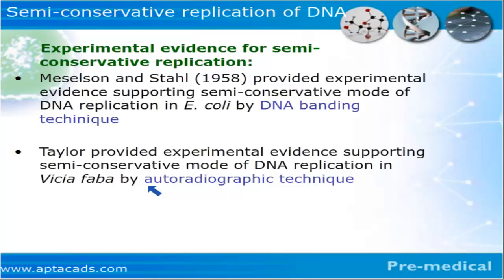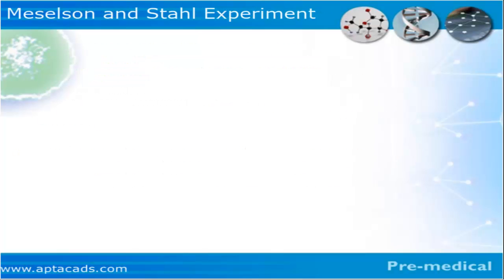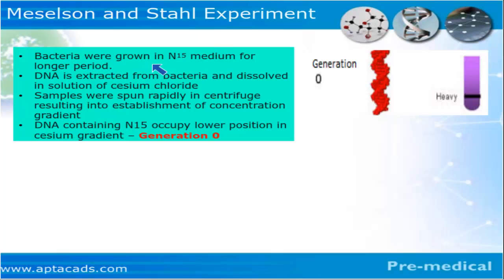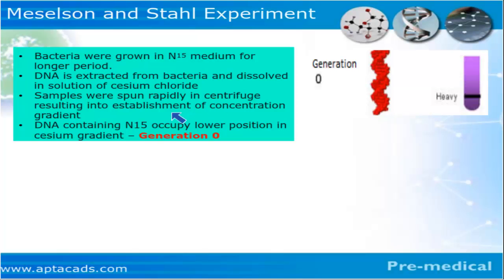For this experiment, Meselson and Stahl first grew bacteria in a radioactive medium containing N15 for a relatively longer duration of time. Since the bacteria was growing in N15 medium, both strands became radioactive — as we can see in this diagram, the red color signifies that both strands have N15. The DNA was then extracted, dissolved in cesium chloride, and the sample was spun, producing a heavy band based on density. This entire event was referred to as Generation Zero.